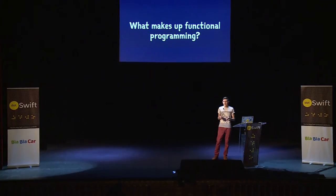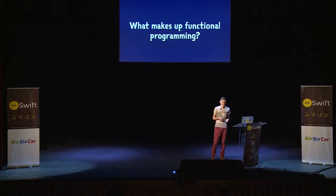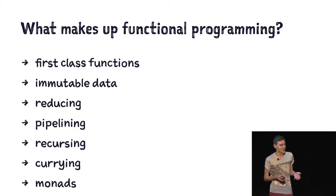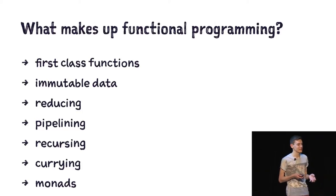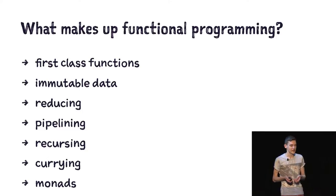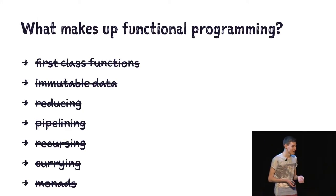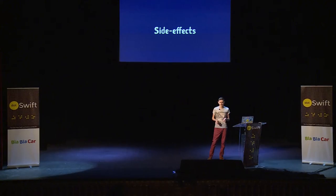So what is it that makes functional programming? What makes a function functional? It's programming done with expressions. Usually when you look at functional programming, people will talk about all these different characteristics, such as first-class functions, immutable data, reducing, pipelining, recursion, currying, and monads. Well, let's ignore all that. Functional programming is characterized by one thing and one thing only: the absence of side effects.